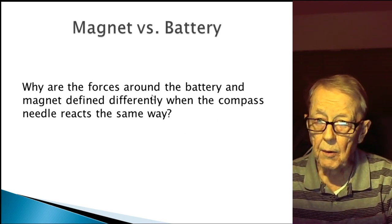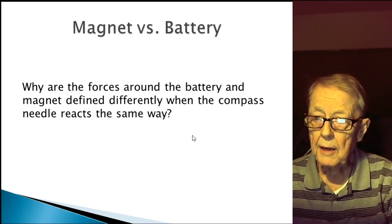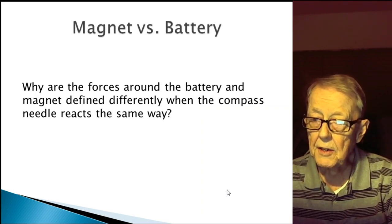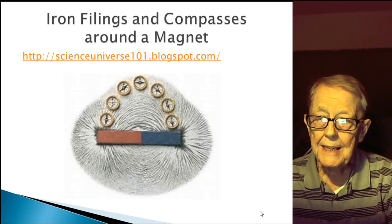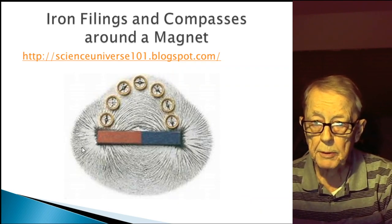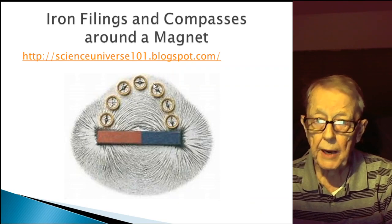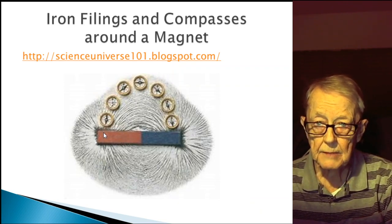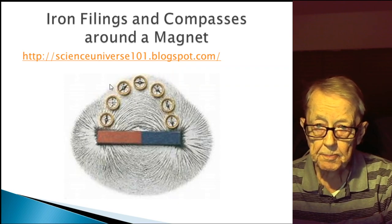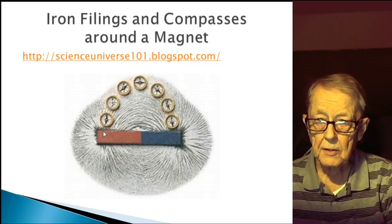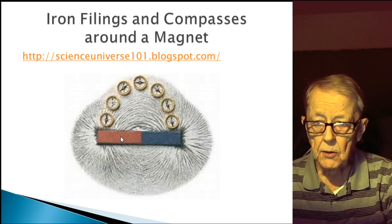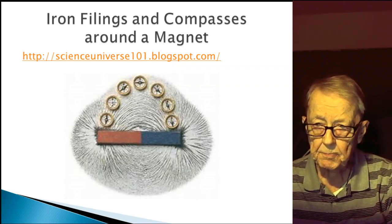Place a compass around a magnet, place it around a battery — they seem to react the same way, and yet they're defined differently as to what the cause is. I went to the internet and found an image showing a compass around a magnet, which also happened to show iron filings. You can clearly see the compass needle in each compass lining up with the field lines, and the iron filings show those lines as well.